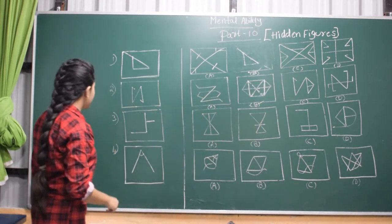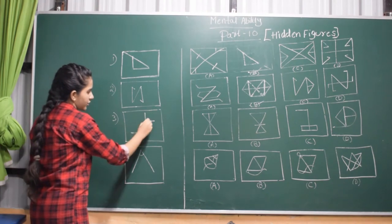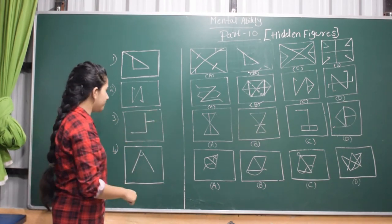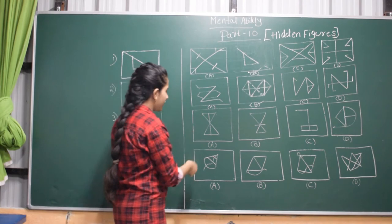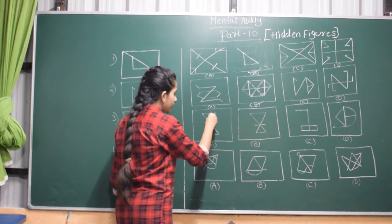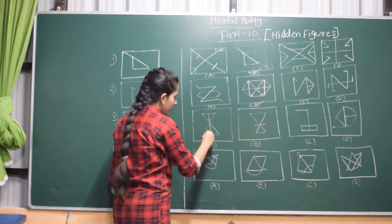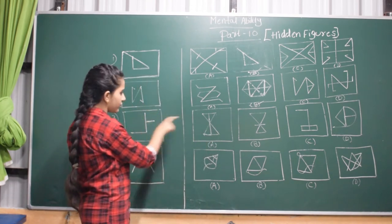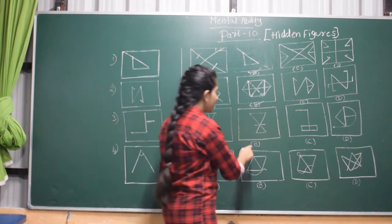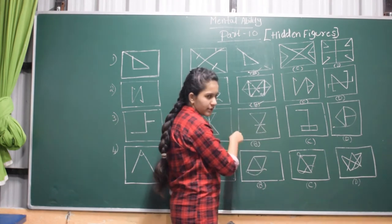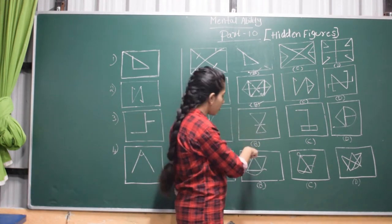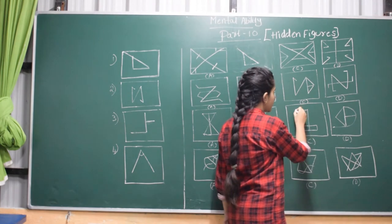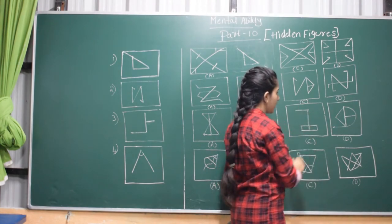Let's go to the third question. This is the question figure — let's find in which answer figure this is hidden. In the first option, there is a line, but there is no front line, so this is not the answer. In the second figure, there is no stride line at all, so this is also not the answer. In the third figure, the line is there but it is inverted, so this is also not the answer.